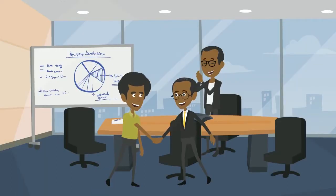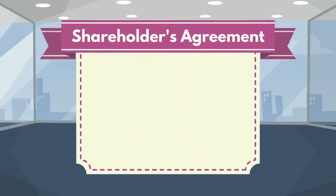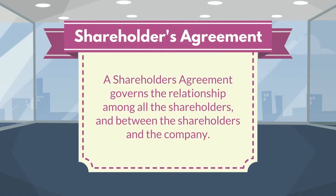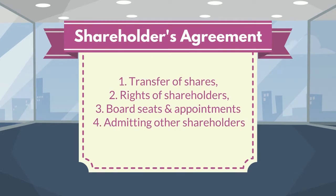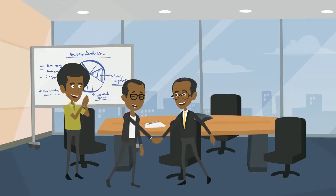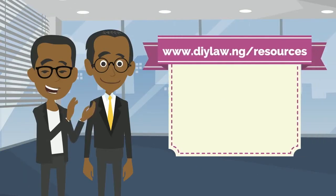In addition, all three of them as shareholders need to enter into a shareholders' agreement. A shareholders' agreement governs the relationship among all the shareholders and between the shareholders and the company. It regulates issues such as transfer of shares, rights of shareholders, board appointments, and admission of other shareholders. Having signed a shareholders' agreement, all three of them feel protected and continue to do business cordially.